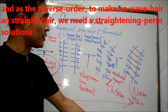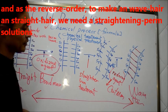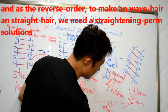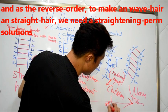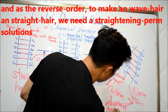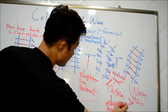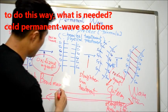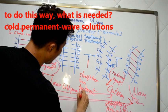Cold permanent wave solution when we want wavy hair, and if we want to change wavy hair into straight hair, we need straightening perm solution. This is how straightening perm solution works.